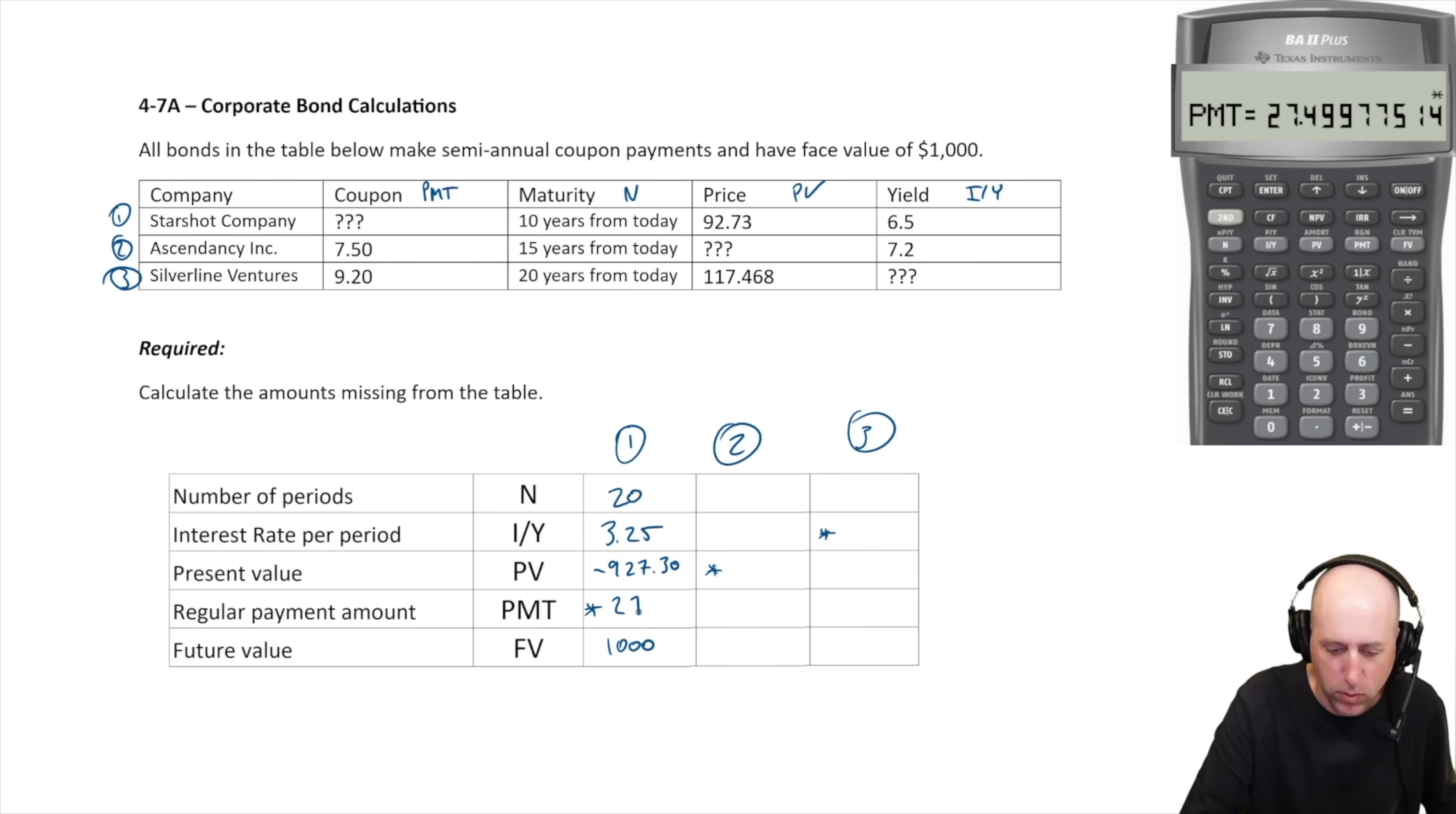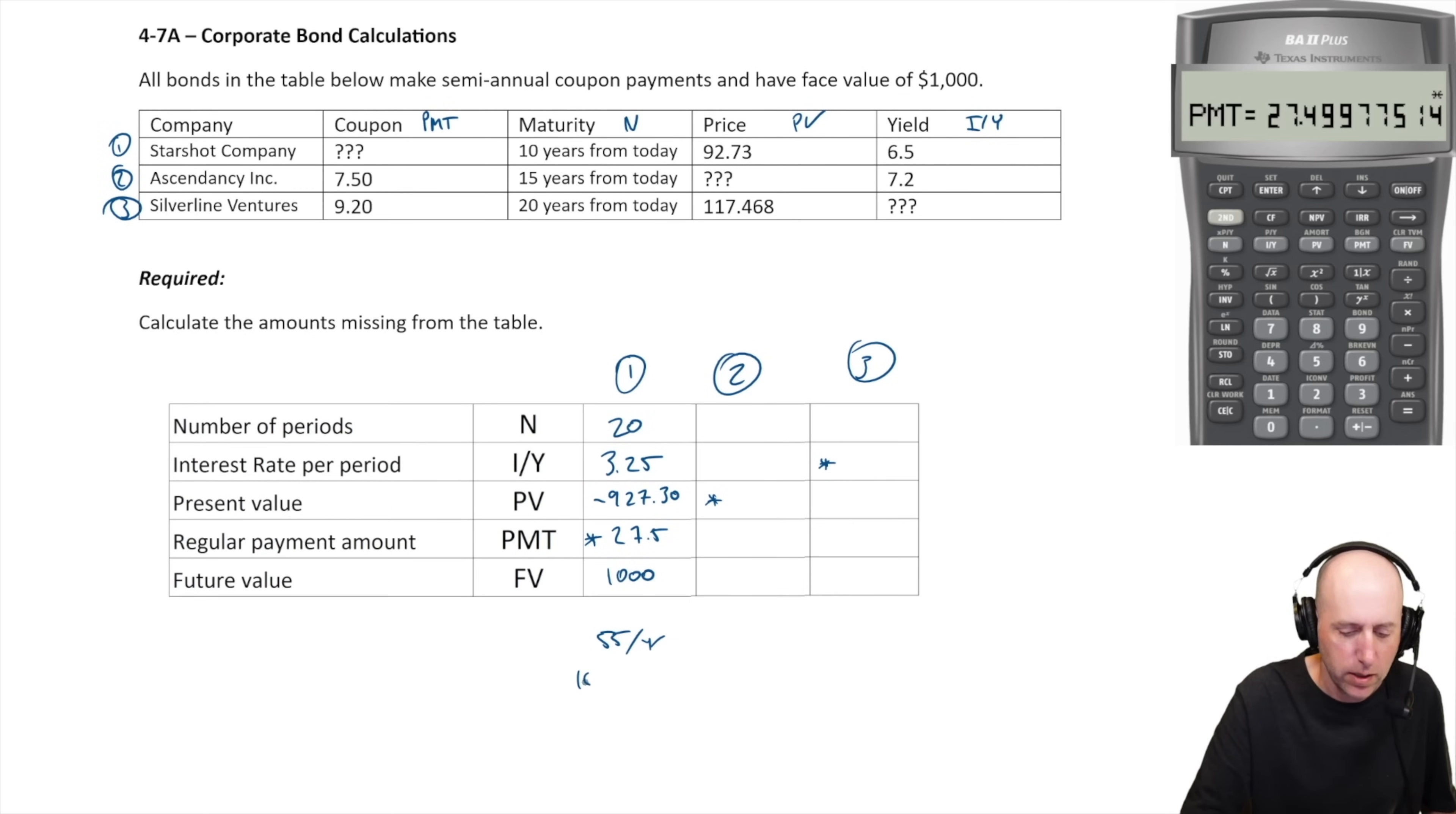We compute PMT and I get 27.4997. I'm going to just call that $27.50. Now that is our payment every six months, so annualized, $27.50 times two is $55 in interest per year. $55 per year, well on a $1000 bond, $55 in interest per year is 55 divided by 1000, that's 0.055, it's 5.5%. So our coupon would be quoted as 5.5%. 5.5 is the answer for part one, Starshot.